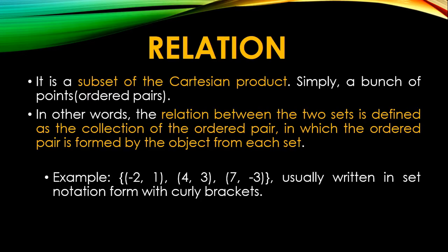So relation is just a subset of the Cartesian product. So any ordered pair from the answer of the Cartesian product, those are relations. So the relations between the two sets is defined as the collection of the ordered pair. So for example, we have set {(-2, 1), (4, 3), (7, -3)}. So this is written inside a brace.